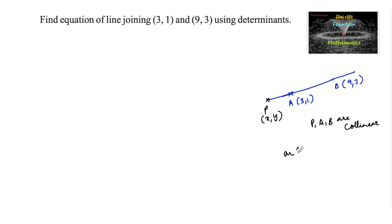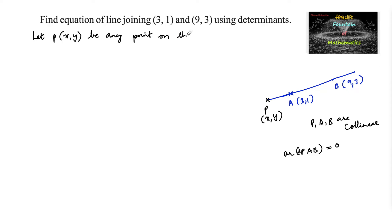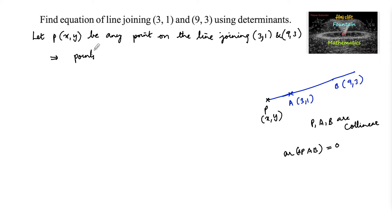Since the points are collinear, the area of the triangle formed by these points will be 0. Using this collinearity concept, we can find the equation of the line. Let P be any point on the line joining (3,1) and (9,3), so that points P, A, B are collinear.